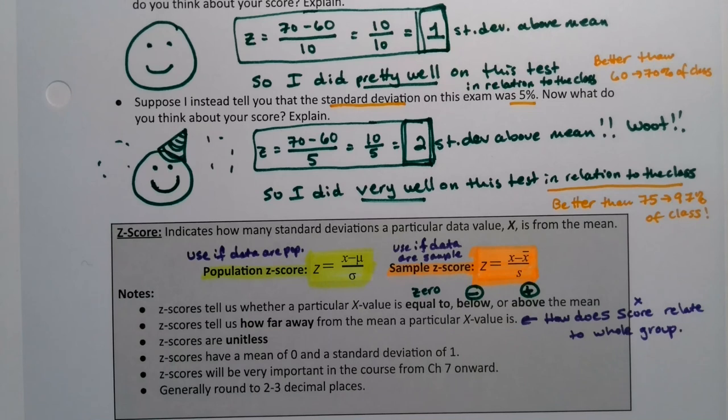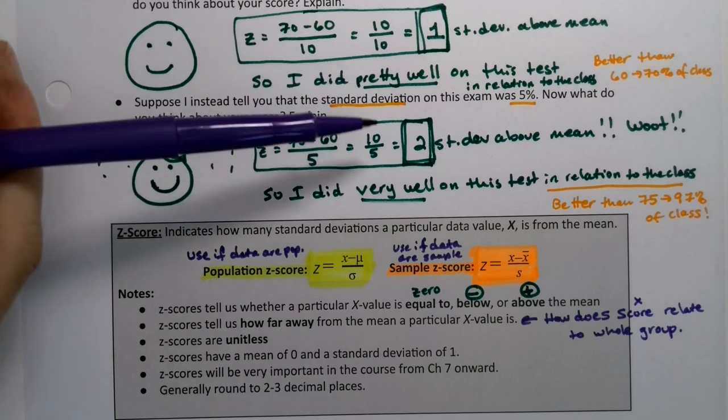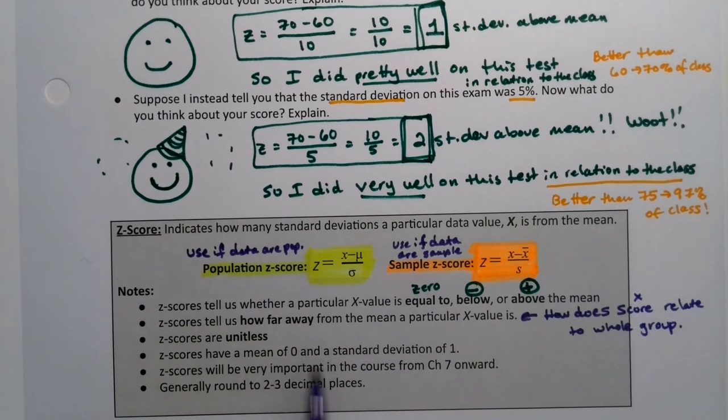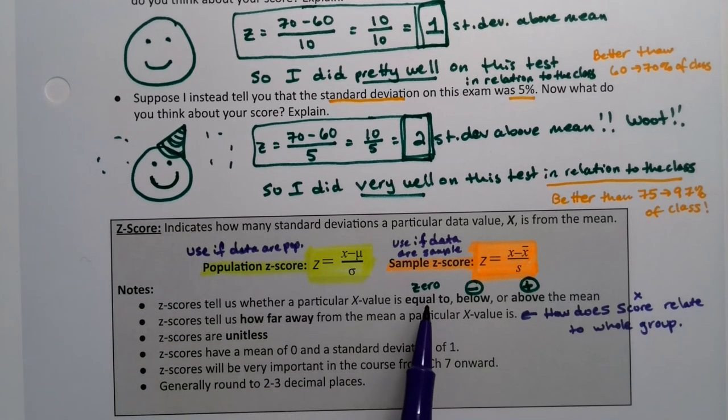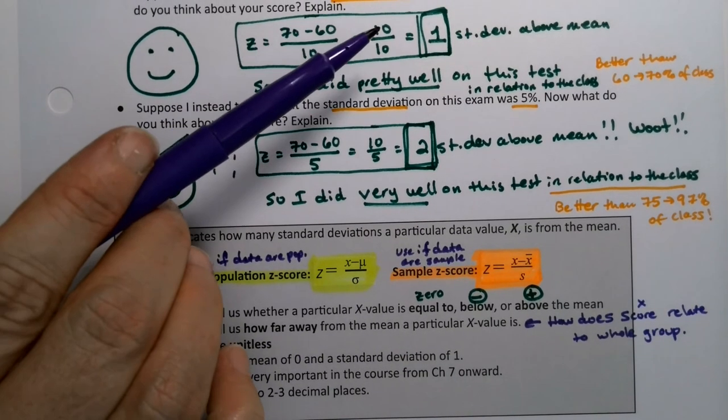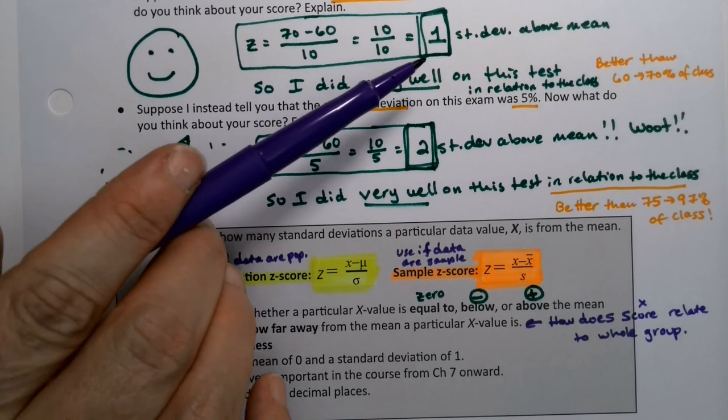The Z-scores are unitless. There's no inches, no feet, no percents, nothing. It just is a number. So there's no unit to it. Z-scores have a mean of zero, of course, because if you're equal to the mean, then your Z-score is zero, and a standard deviation of one, which we saw right here. Because if you're one standard deviation away, right, then your Z-score is one.